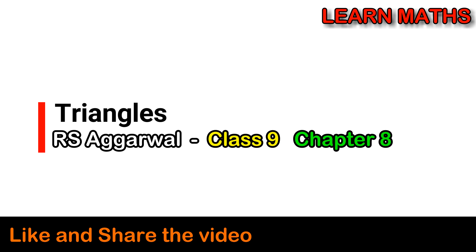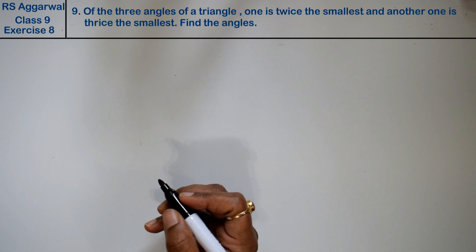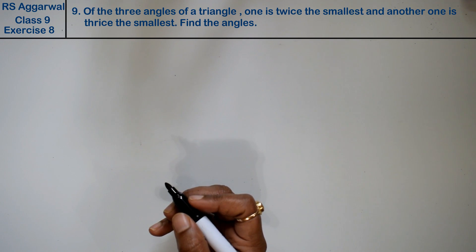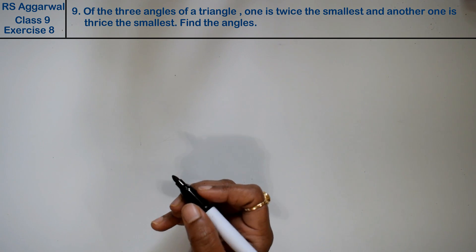Let's do question number 9 of exercise 8 on triangles. The question states: of the three angles of a triangle, one is twice the smallest and another is thrice the smallest.